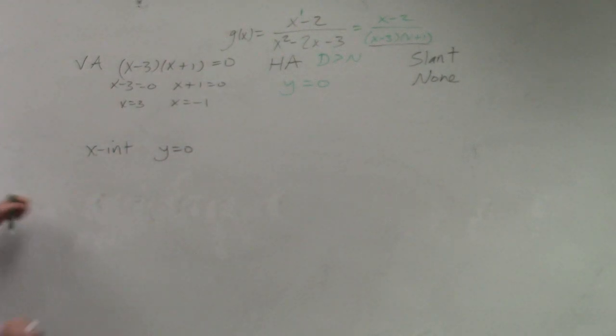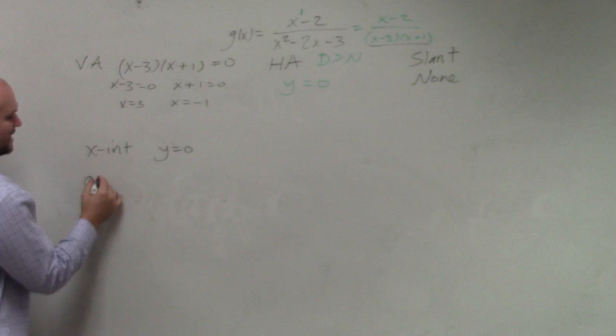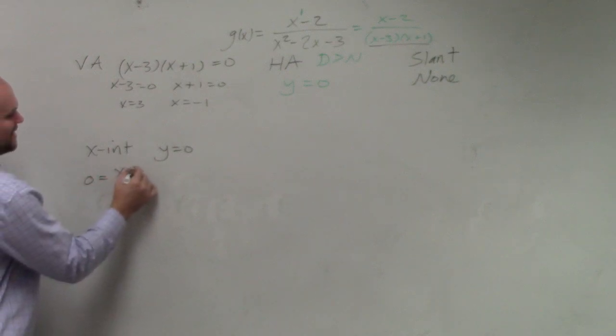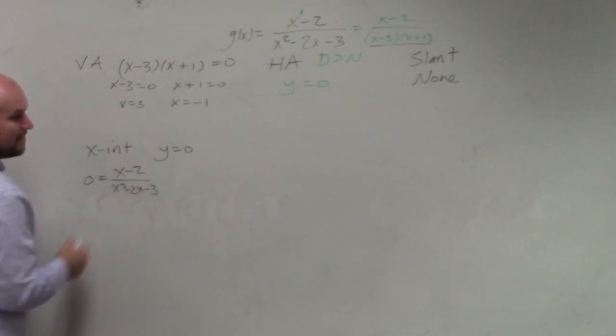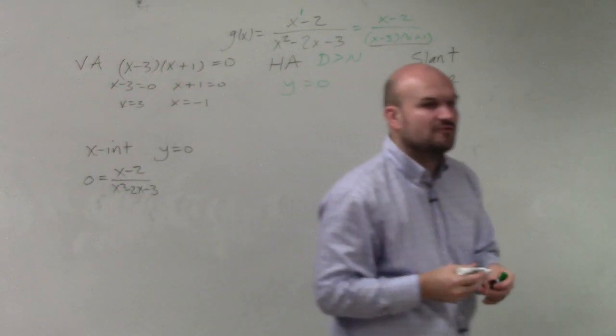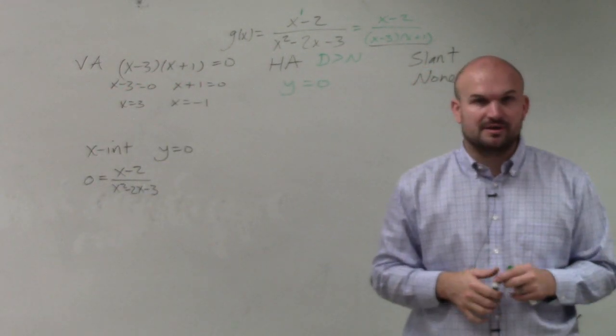So all we're simply going to do is replace g of x, which is our y, with 0. So I have x minus 2 over x squared minus 2x minus 3. Well, if we need to solve for x, we cannot solve for x when it's in the denominator, correct?